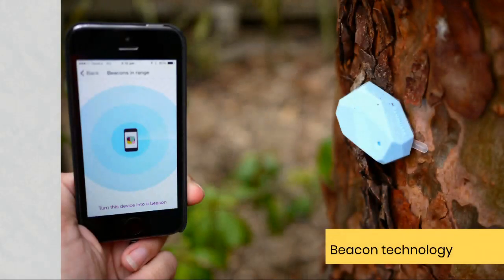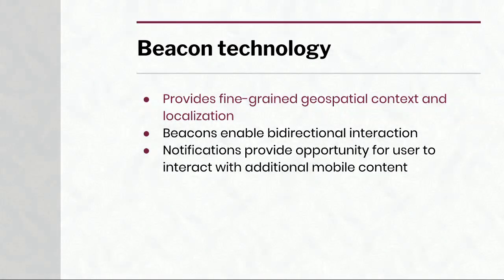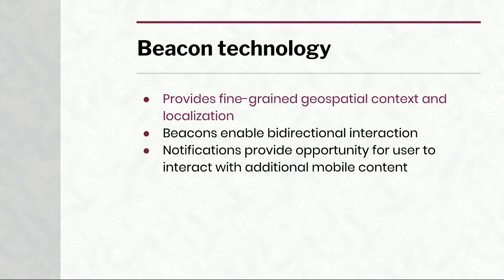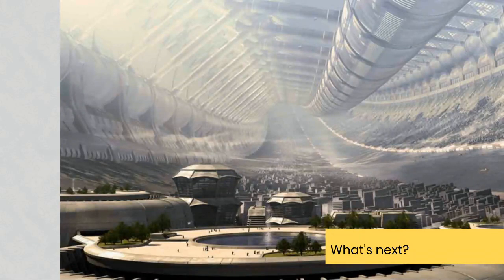What about beacon technology? It seems like a whole different space, but actually it's quite similar. The difference is that beacon technology provides fine-grained geospatial context and localization. Beacons — especially Bluetooth beacons — allow for bi-directional interaction, and you can provide notifications that allow the user to interact with additional content. It's almost like a rabbit hole when you think about what beacons actually do as a first step. But the world is not going to stop there. We can never possibly know what channels are coming next, and we have to be prepared for even more examples of situational geospatial content appearing in the near future.